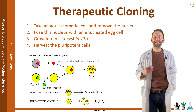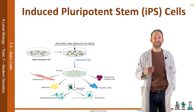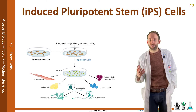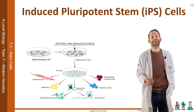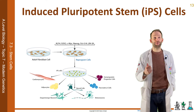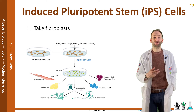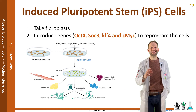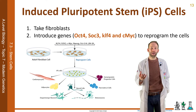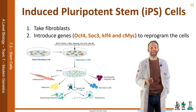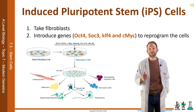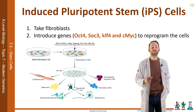With induced pluripotent stem cells, scientists have been able to treat adult stem cells to turn them into pluripotent cells again — almost reversing them back to a pluripotent state. You take fibroblasts, cells found on the skin of adults, and introduce specific genes: OCT4, SOC3, KLF4, and CMYC. These reprogram the cells, undoing changes made during specialisation so that they become pluripotent again. However, there can still be problems — the introduced genes can promote cancer development, and the way cells are changed can sometimes cause rejection.